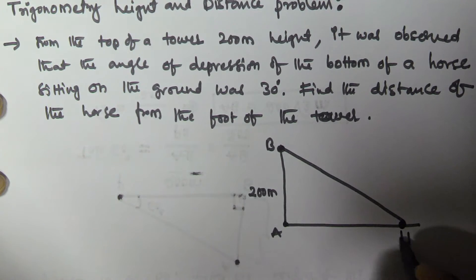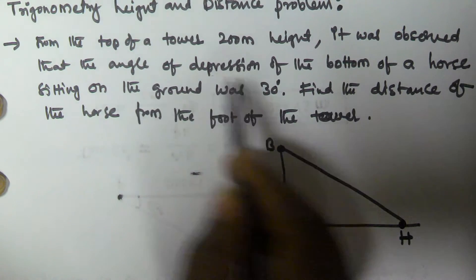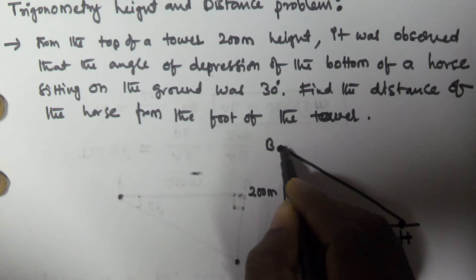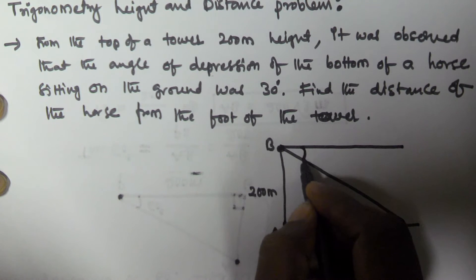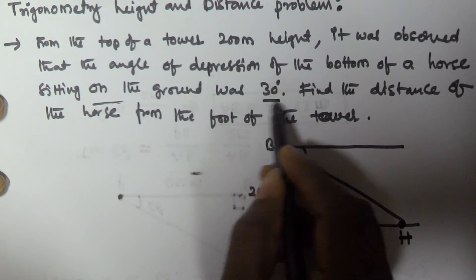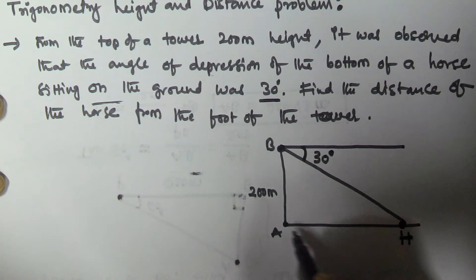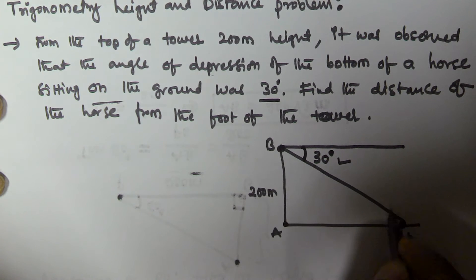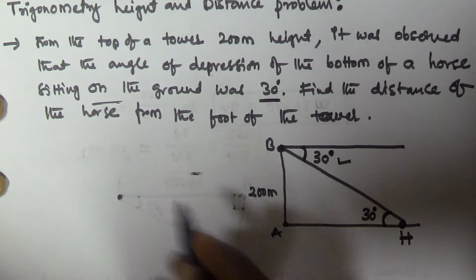The person at the top is watching the horse at point H. It was observed that the angle of depression is 30 degrees — that means the person is looking downwards. Whenever a person looks downward, we draw a horizontal straight line and take this angle as the angle of depression. So the angle of depression is 30 degrees.